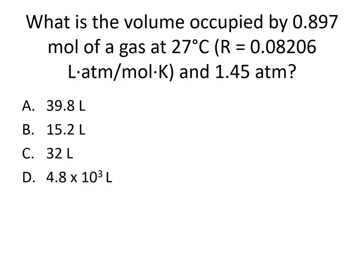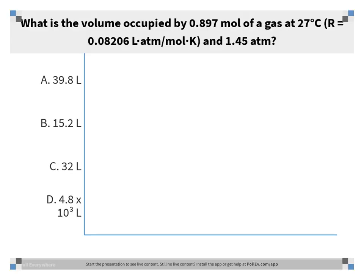In this question, you're using the ideal gas law to find an unknown volume when you know the moles, temperature, pressure, and the gas constant R. The correct answer is B, 15.2 liters. Rearrange the ideal gas law to solve for volume, make sure temperatures are in Kelvin, and verify that the other units match up with the units for R.